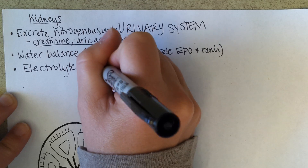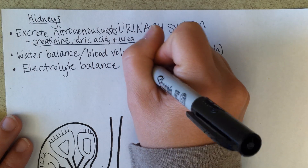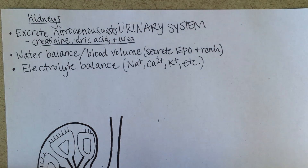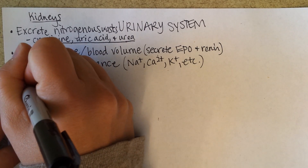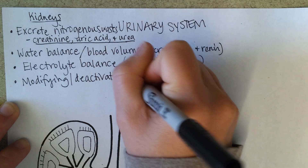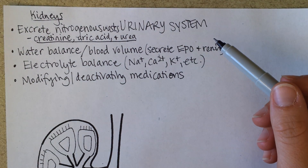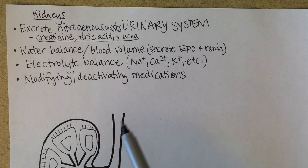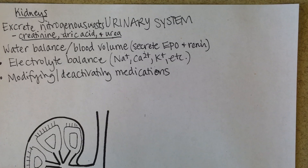Electrolyte balance ensures that you have appropriate levels of salt, calcium, etc. Another function we can add is modifying drugs or deactivating medications. When you're in an allied health program, it's important to recognize that how often you need to give a medication depends on both the liver, which modifies and deactivates medications, and also how much the kidneys alter and excrete a medication so that you need to give another dosage.